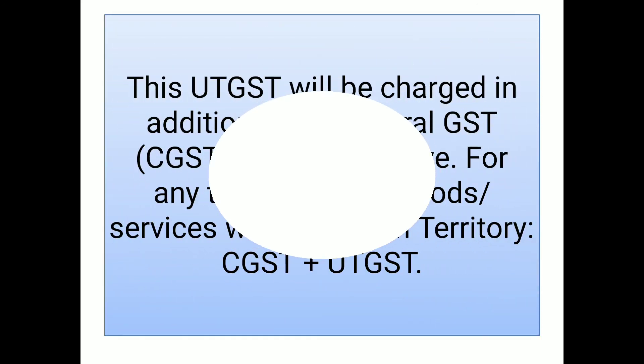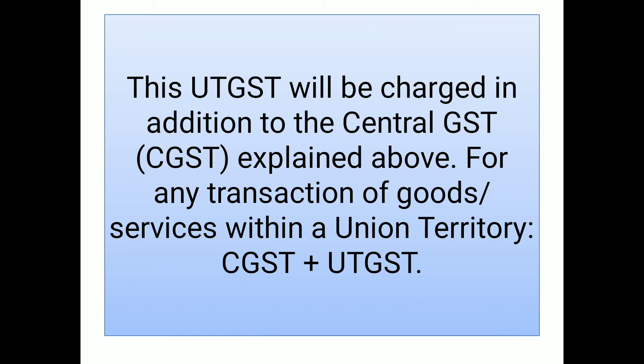UTGST will be charged in addition to CGST for any transaction of goods and services within a Union Territory — that is, CGST plus UTGST. So if goods are transferred within the same Union Territory, for example Delhi to Delhi or Chandigarh to Chandigarh, the tax is split: 50% goes to the central government and 50% goes to the Union Territory. This is Union Territory Goods and Service Tax.